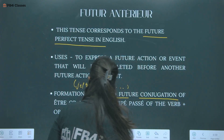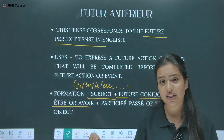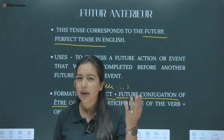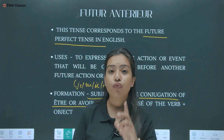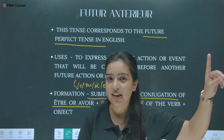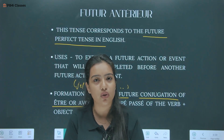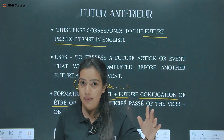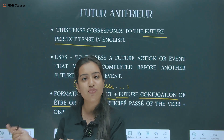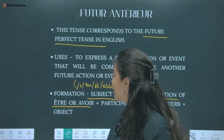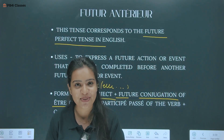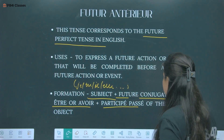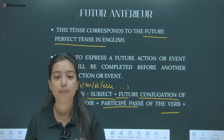Formation: subject + future conjugation of être or avoir (the two auxiliary verbs) + past participle of the verb. These two auxiliary verbs are the most important. We use them in many tenses. If you haven't watched the auxiliary verbs video, the link will be attached here.